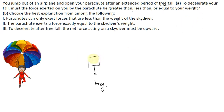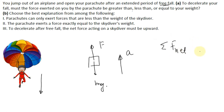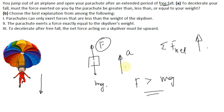When you open your parachute, it applies a force on you in the upward direction. Initially your acceleration was downward, but to decelerate the fall we want the acceleration to be in the upward direction. For acceleration to be upward, the net force must also be upward, so the force exerted by the parachute must be greater than mg.